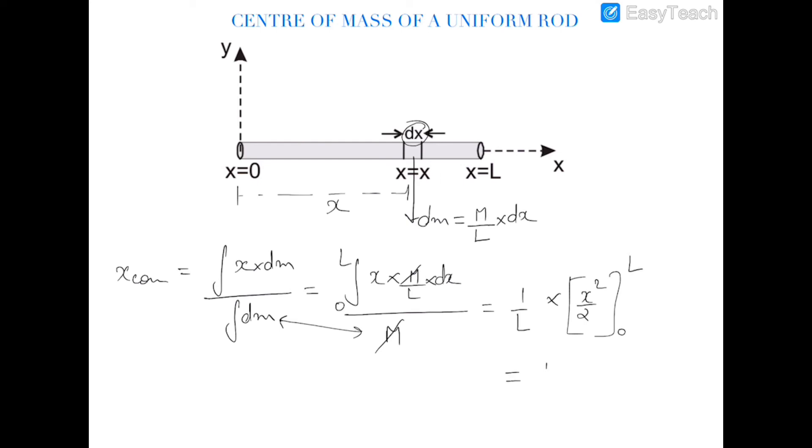So this is equal to l by 2. So the center of mass of this rod will be lying at a distance of l by 2 from origin, which we have already discussed initially. This is COM.